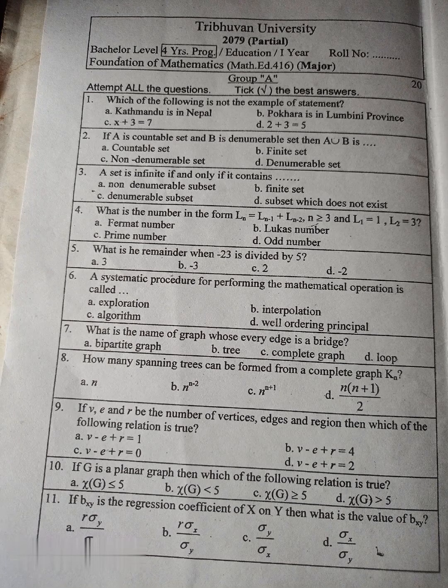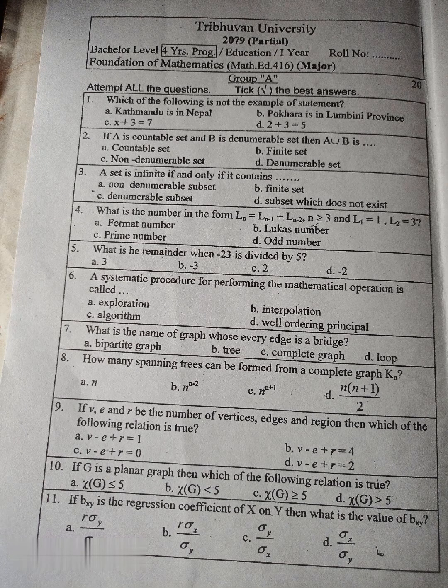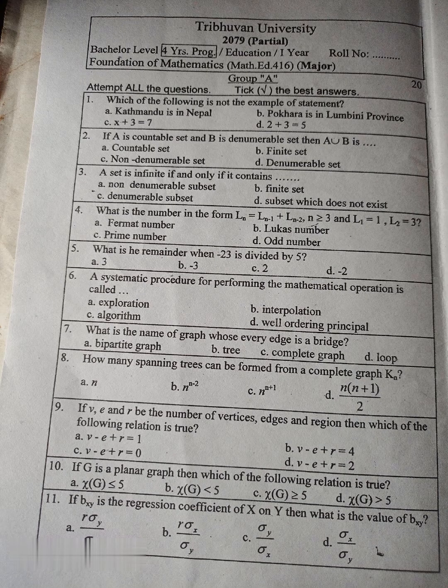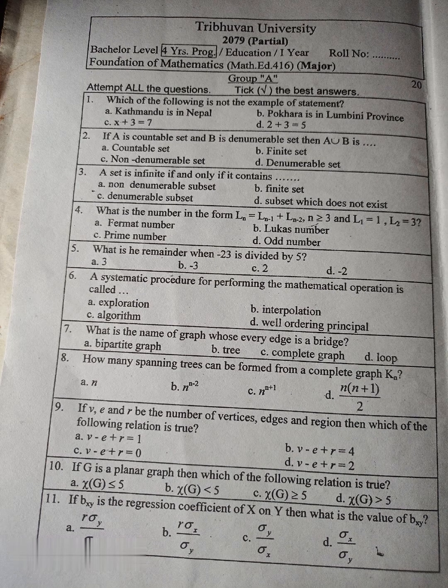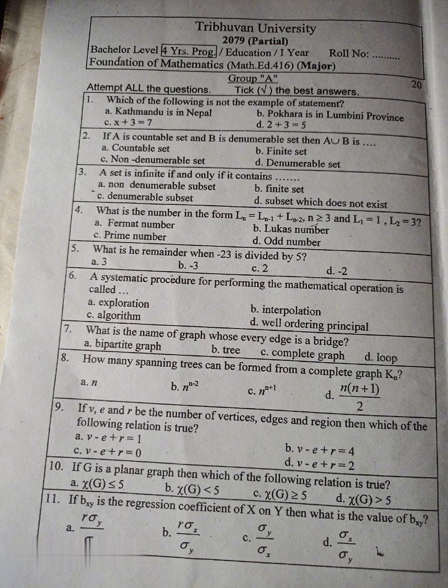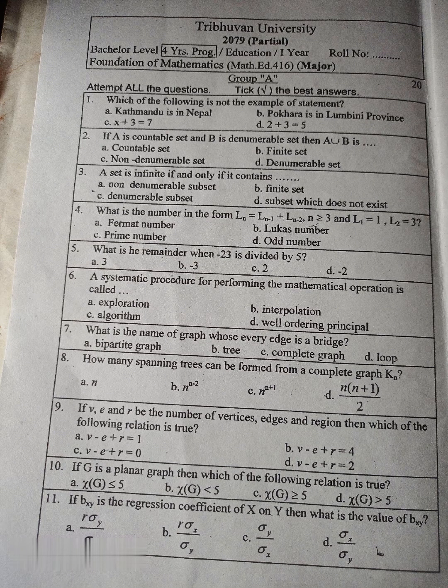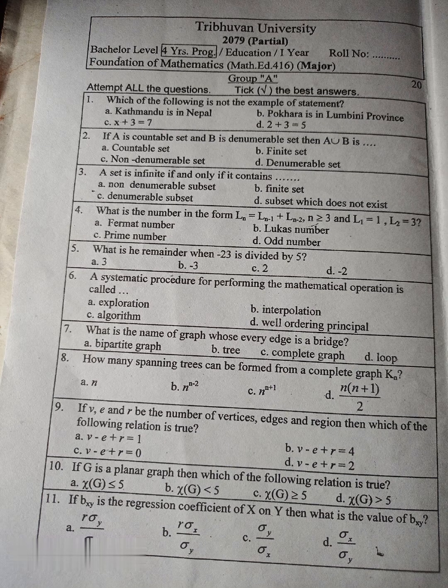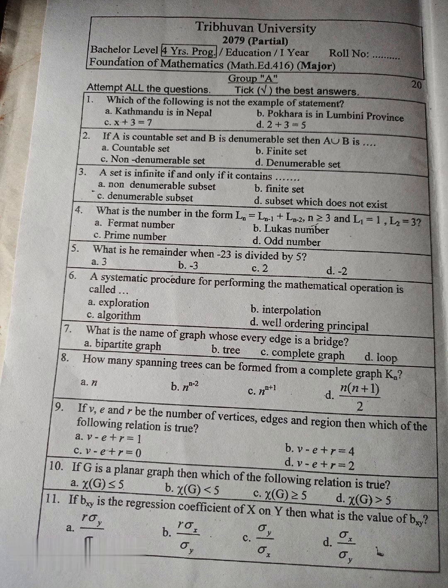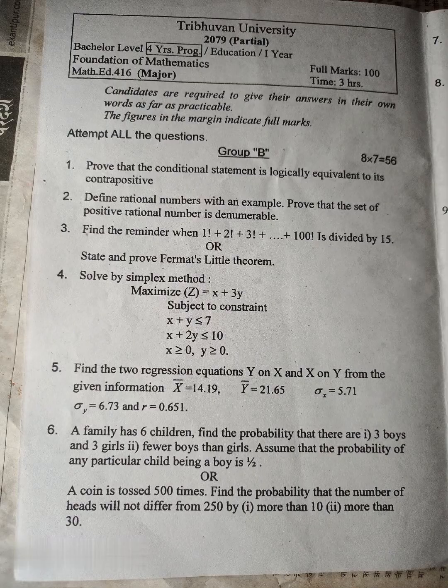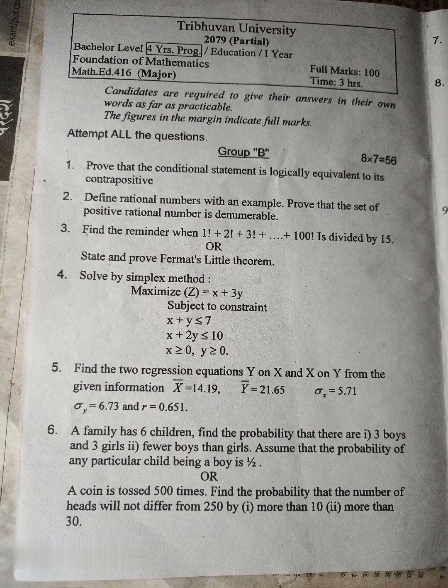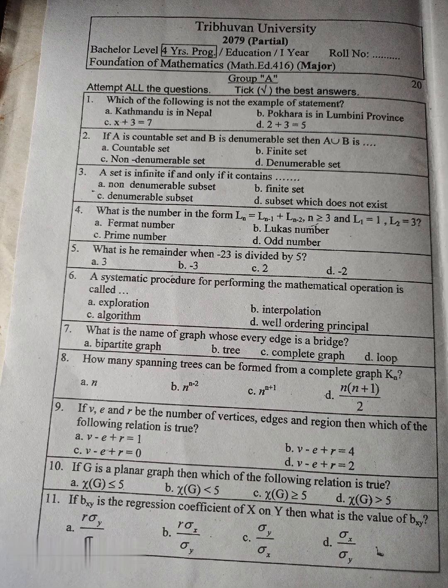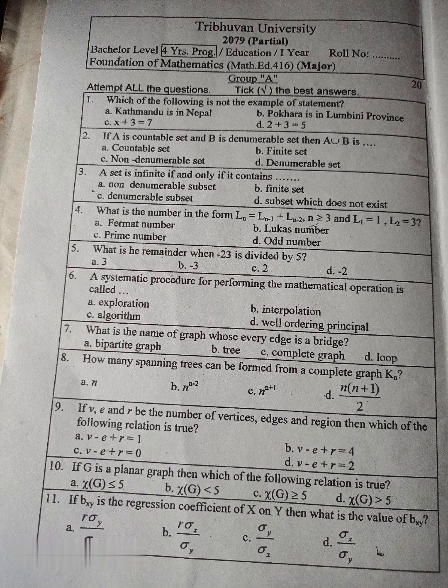Tribhuvan University, partial exam, 2079, Bachelor Level, four years program, Education BA, first year, Foundation of Mathematics, Math Education 416, major subject, question paper, full marks 100, time 3 hours. There are three groups. In Group A, there are given 20 multiple choice questions, each question has mark 1, and total marks of Group A is 20.